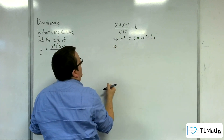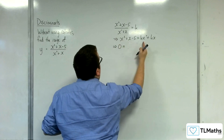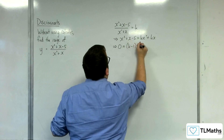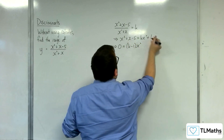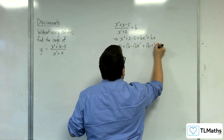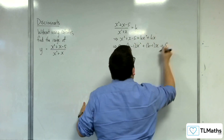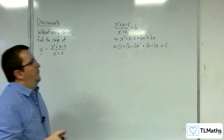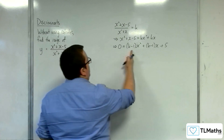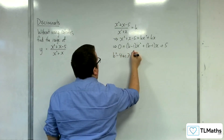Then, I'm going to move everything on to the right-hand side. So, 0 is equal to — taking the x squared from both sides — we're going to have k take away 1 x squared. Then, we've got the kx take away x, so plus k minus 1 x, and add the 5 to both sides. So, in order for this curve to intersect y equals k, I'm going to need the discriminant of this quadratic to be greater than or equal to 0.